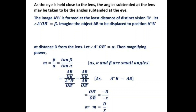The angle subtended at the lens may be taken as the angle subtended at the eye. The image A'B' is formed at the least distance of distinct vision D. Let the angle A'OB' equal beta. We imagine the object AB displaced to a new position A''B' at distance D from the lens, and take angle alpha as A''OB'. We apply the formula for magnifying power expressed as beta divided by alpha. Since these angles are very small, we apply trigonometric functions.